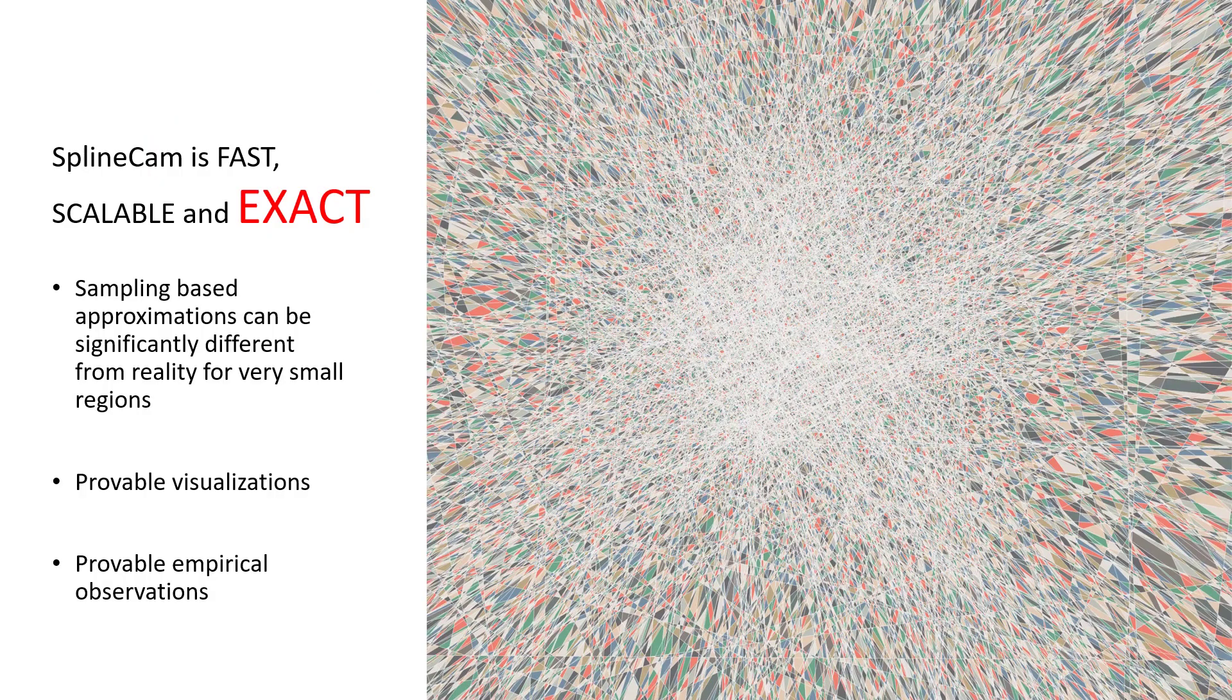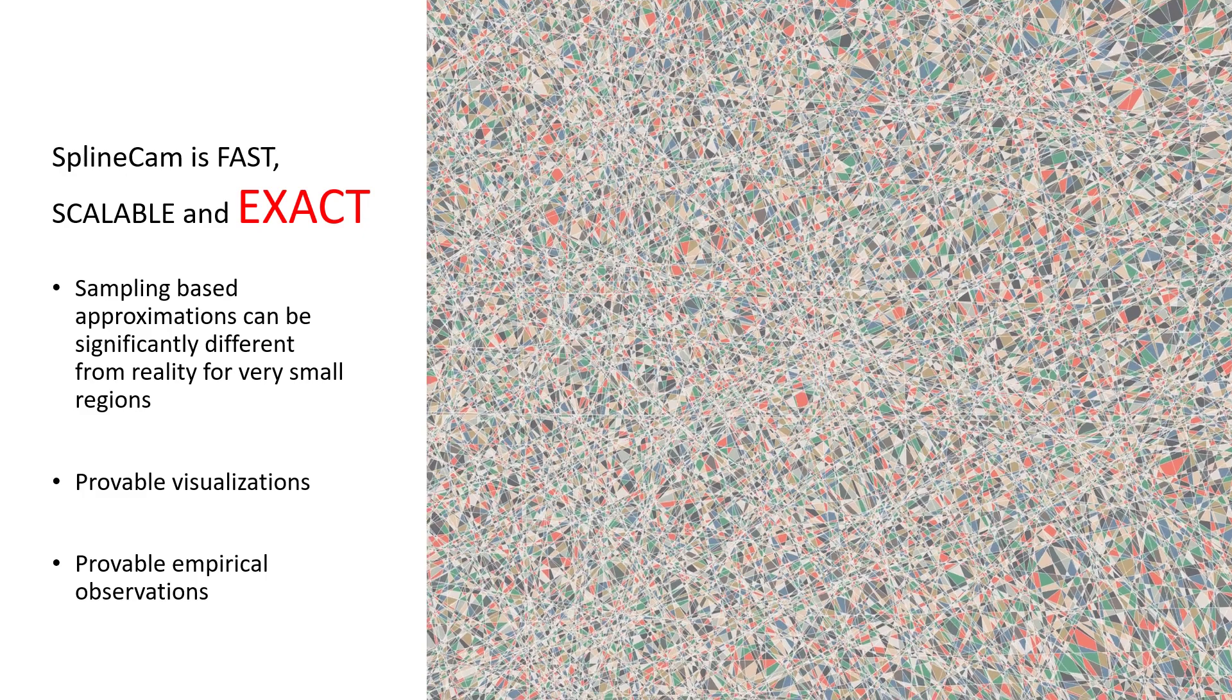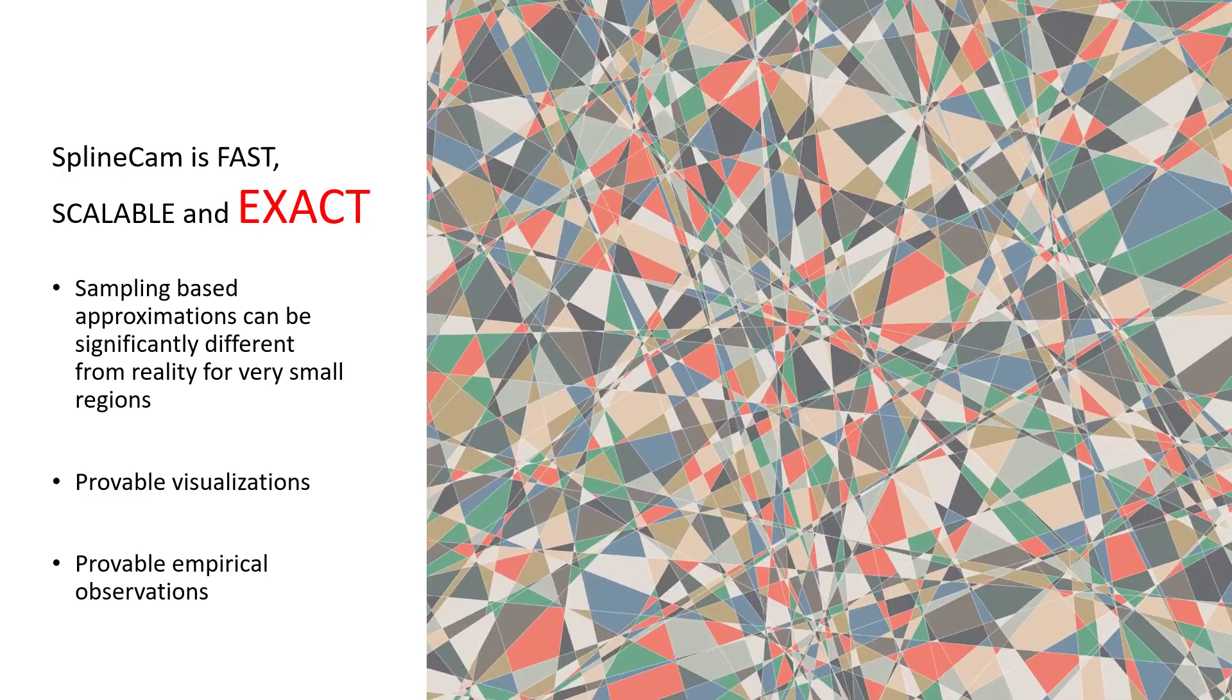SplineCam is fast, scalable, and exact, up to machine precision. Being exact can be especially important when the partition has very small regions, since sampling with approximations in such settings can be quite erroneous. Since regions become smaller as the size of the network grows, SplineCam can be very important in studying state-of-the-art networks with provable visualizations and provable empirical observations.